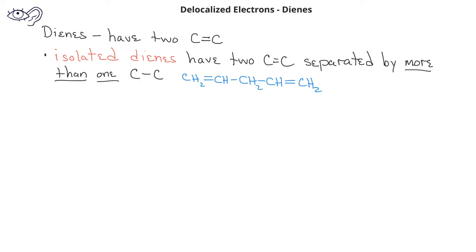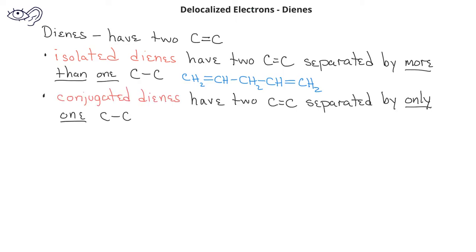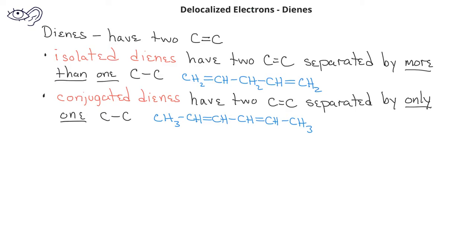We can also have conjugated dienes, which have double bonds separated by exactly one single bond. In the second molecule, we see that there are two double bonds, and in between those there is a carbon-carbon single bond. The pi electrons in the isolated dienes are localized, and so isolated dienes have no special stability.